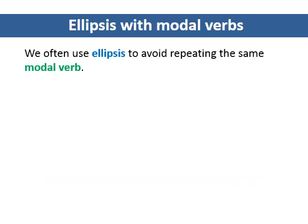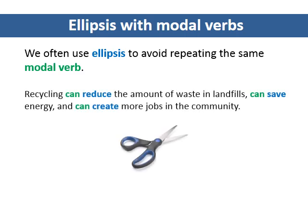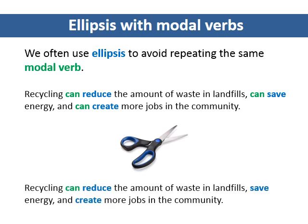We often use ellipsis to avoid repeating the same modal verb. Look at this example — what can we remove from this sentence? In the sentence with ellipsis, we use the modal verb 'can' one time. This is because 'can' modifies all three main verbs: reduce, save, and create. It is not necessary to repeat it because all three verbs have the same subject and are the same tense.